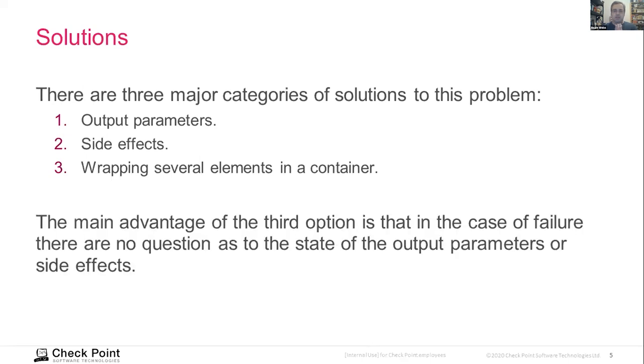And there are several ways to do that. But I think that generally we can categorize them in three major types or families of solutions. The first one is output parameters. This is very common in C. We actually give a function a parameter that tells it where to save the output. That's one option. The second option is to have some sort of side effect. So when I invoke the function, I get the output, but also something that is outside of the function changes, maybe a value is saved to a global variable or something else. And of course, the third option is to wrap several elements in a container.